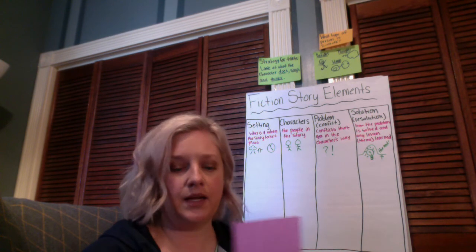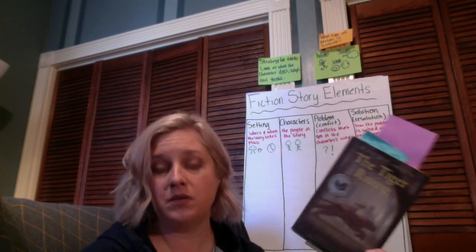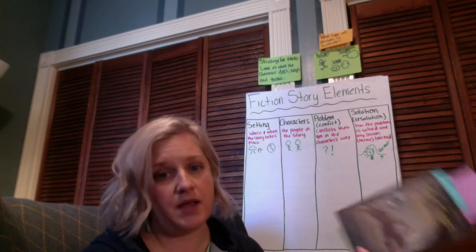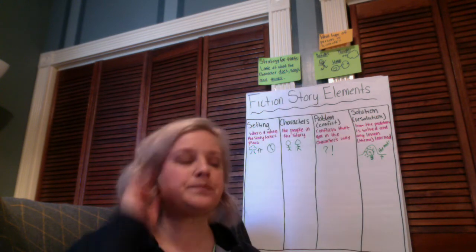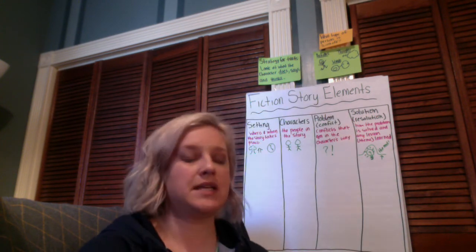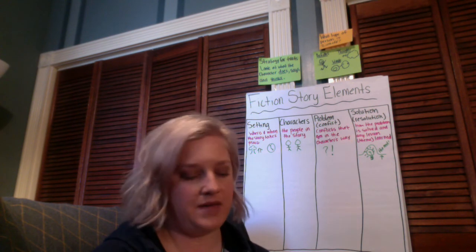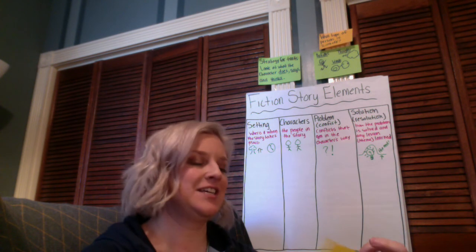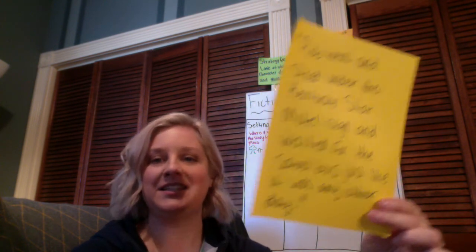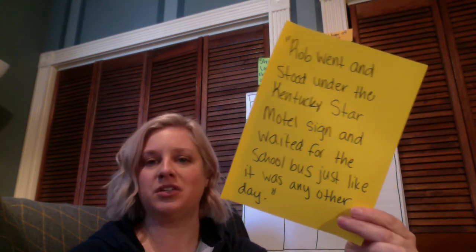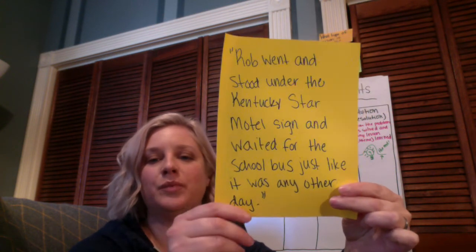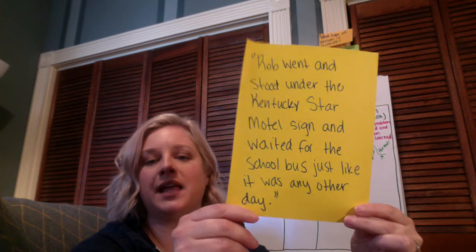So in order to practice this, let's take a look at a chapter book we're all familiar with, regardless of whose class you've been in this year — either mine or Ms. Blanco's. We're going to look back at The Tiger Rising, and I have some examples from just the first chapter of that book. These are sentences taken directly from the text. Here's one: 'Rob went and stood under the Kentucky Star motel sign and waited for the school bus, just like it was any other day.'